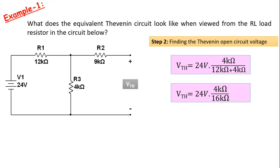To find this voltage, if we divide the source voltage of 24V proportional to the resistor values, we can find the voltage falling on the 4kΩ resistor. We can write this mathematically as in this formula. When we do this, we find the Thevenin voltage as 6V. We found Thevenin's equivalent resistance and Thevenin's open-circuit voltage.